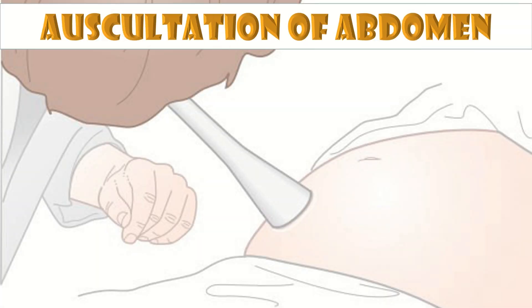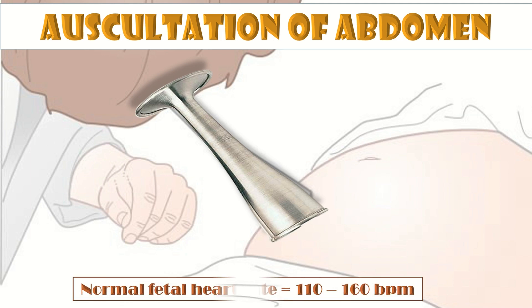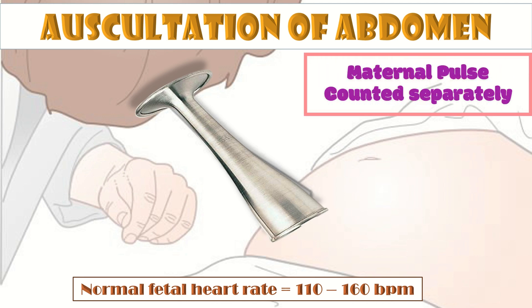It is very important to know that the nearer the shoulder, the clearer the fetal heart can be heard. A normal fetal heart rate is between 110 to 160 beats per minute. Along with that, the mother's pulse should be counted separately.